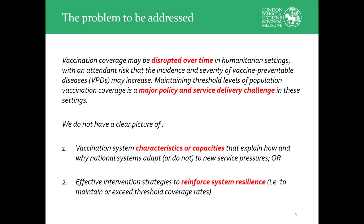In terms of the problem to be addressed: everything we know from the literature suggests that vaccination coverage is at risk of being seriously disrupted in humanitarian settings, leading to downstream risks — first and foremost, an increase in incidence and severity of vaccine-preventable diseases with significant mortality and morbidity, especially among young children. But we don't really have a clear understanding of what system characteristics explain why some systems respond better to shocks, or what works for strengthening resilience long-term.